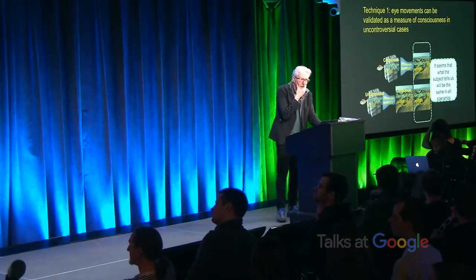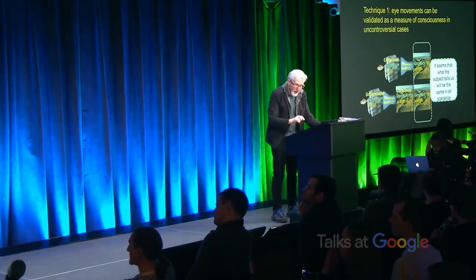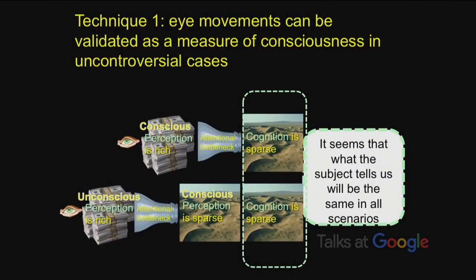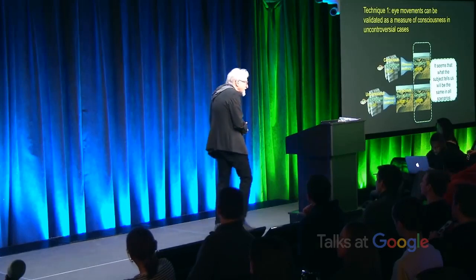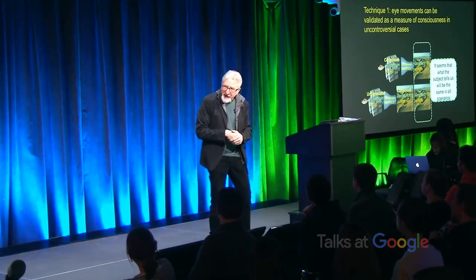However, eye movements can be validated as a measure of consciousness. This is what's called a no-report method. Reports are an index of phenomenal consciousness — if you say you saw it, probably you did see it — but they're also an index of access consciousness. How can you use reports to distinguish between phenomenal consciousness and access consciousness? It seems impossible. But whenever people say something's impossible, it's a dangerous thing, because clever experimenters can find a way to make it possible.